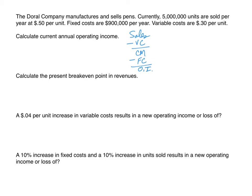First we calculate sales: 5 million units sold at 50 cents each gives us sales of $2,500,000. Variable costs are 30 cents per unit, so 5 million units times 30 cents gives variable cost of $1,500,000. That brings us to a contribution margin of $1,000,000.